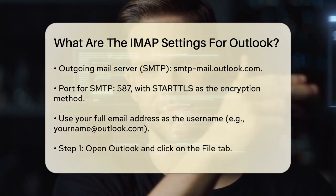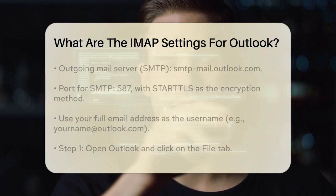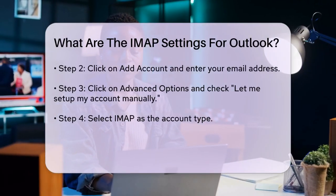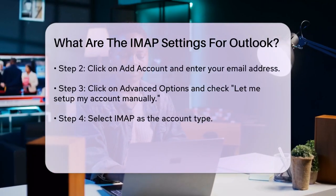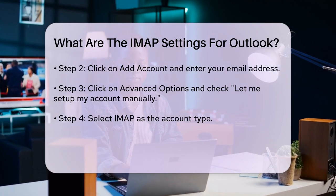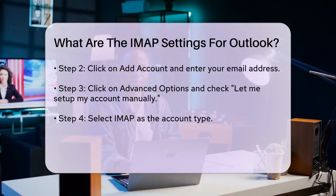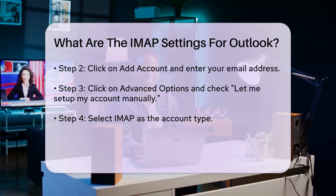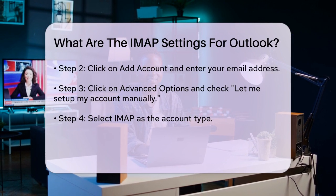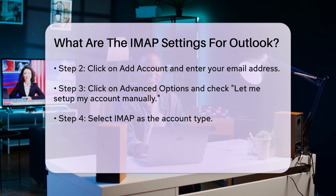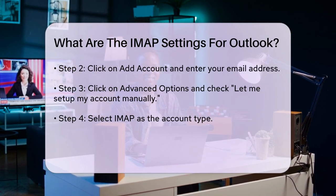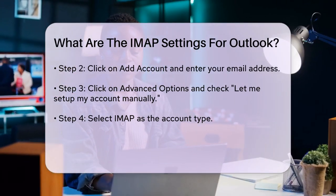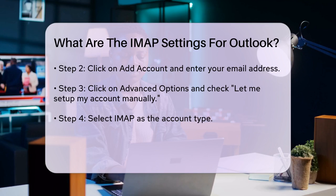Here's how you can manually set this up in Outlook. Open Outlook and click on the File tab in the upper left corner. Click on Add Account and enter your email address. Click on Advanced Options and check the box that says 'let me set up my account manually.' Select IMAP as the account type.